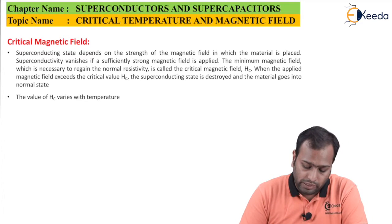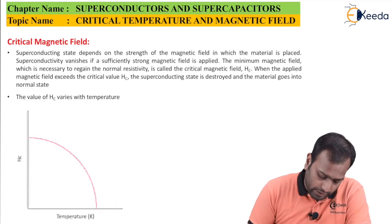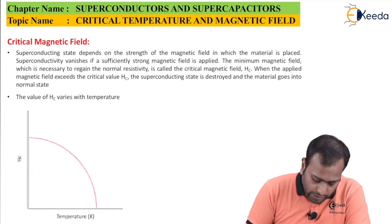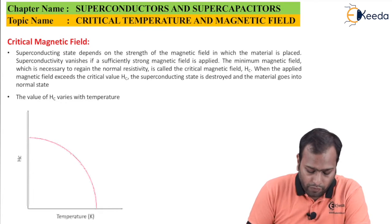Now, if you want to see the graph, the graph looks like this. If you can see, this is the temperature and this is the value for HC.